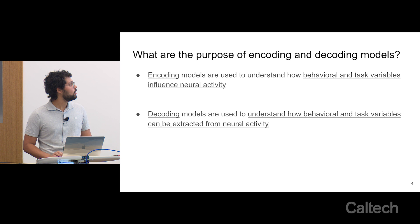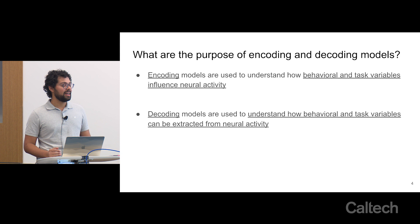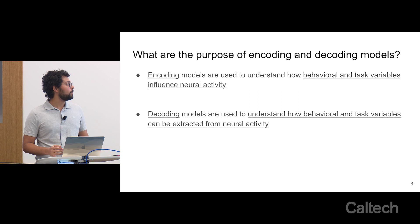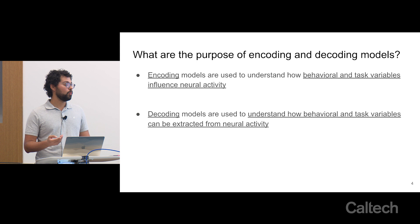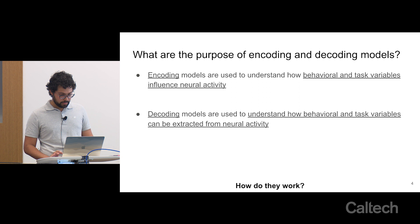So first, what are the purpose of encoding and decoding models? Encoding models are used to understand how behavioral and task variables influence neural activity — for example, when I'm perceiving a stimulus, how is that stimulus being encoded in the brain? Decoding models are used to understand how behavioral and task variables can be extracted from neural activity. So if I have a recording from a single neuron or a population of neurons, am I able to detect what stimulus was being presented based on just the activity?